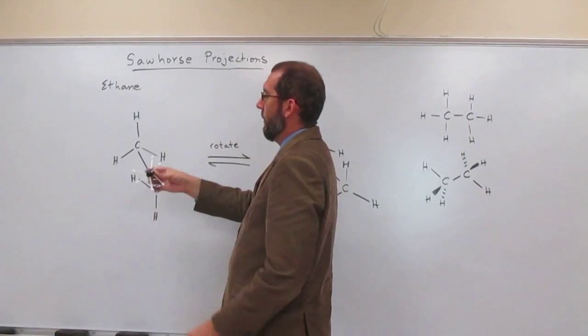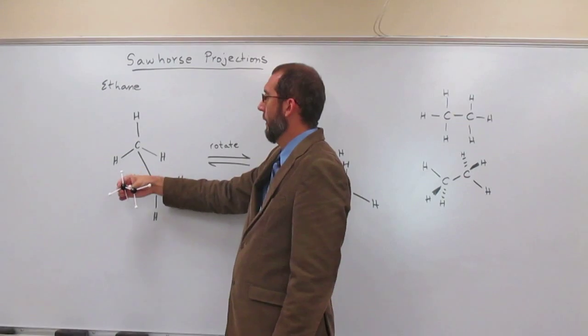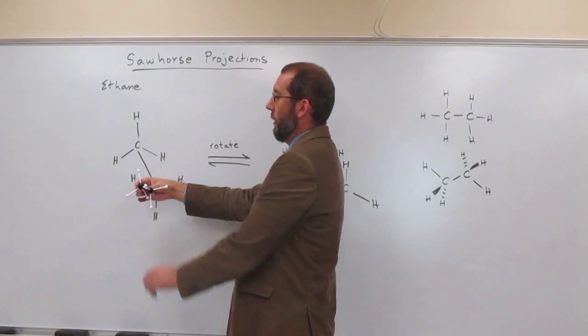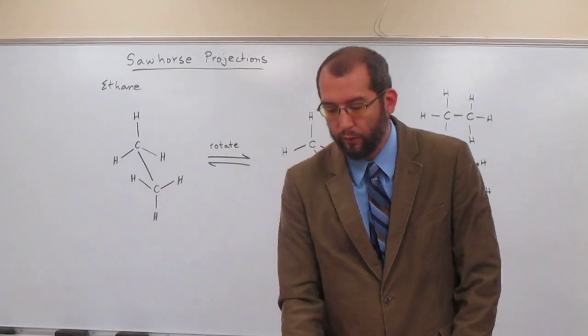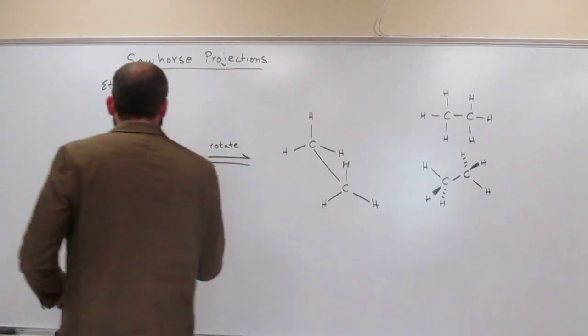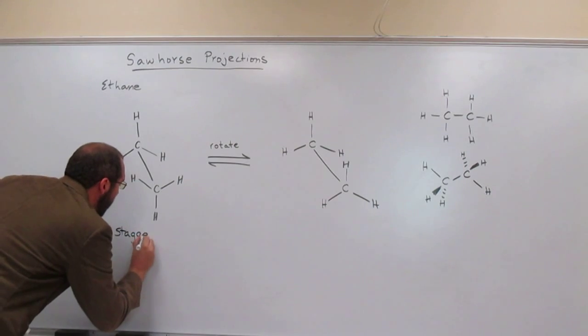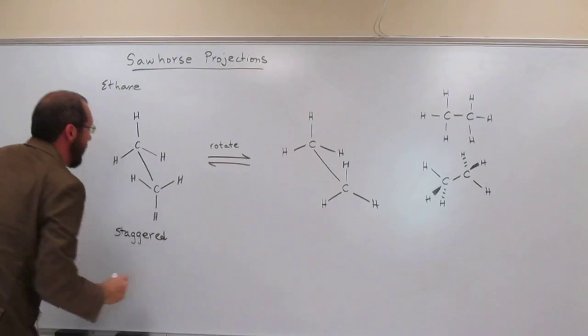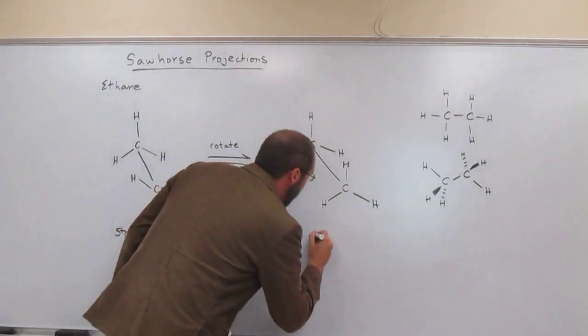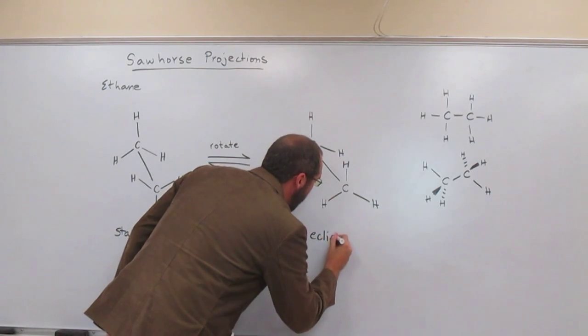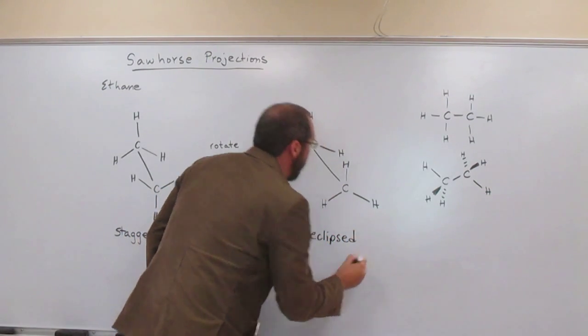And the opposite of eclipsed, it looks like that, is called a staggered projection, or a staggered form. So staggered and eclipsed.